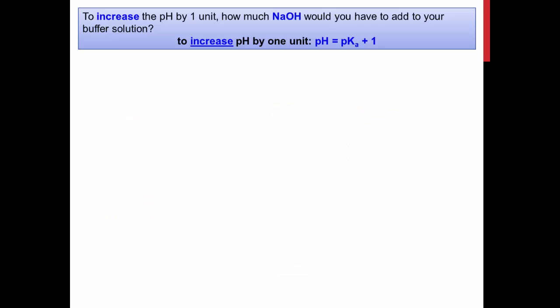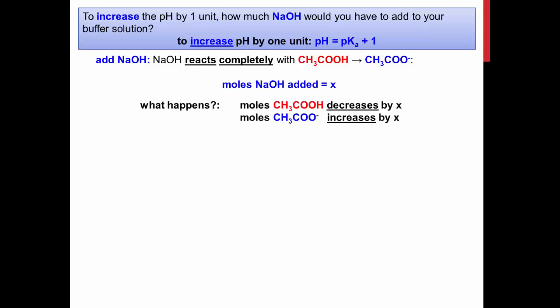Based on the Henderson-Hasselbalch equation, if the pH is increased by 1 unit, this is the same as pKa increasing by 1 unit. Therefore, pKa plus 1 can be substituted into the expression for pH. Both hydrochloric acid and sodium hydroxide are strong, so they react completely with acetic acid or acetate in a 1 to 1 ratio.